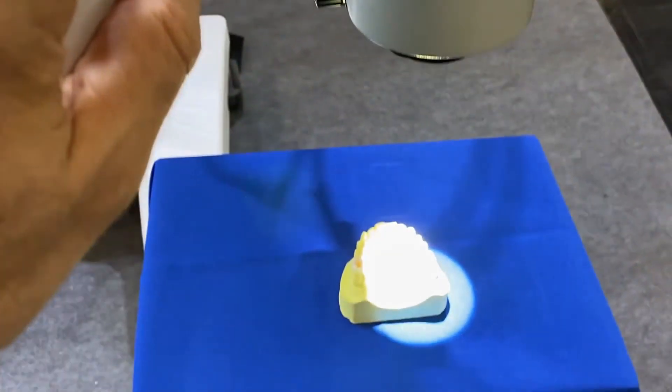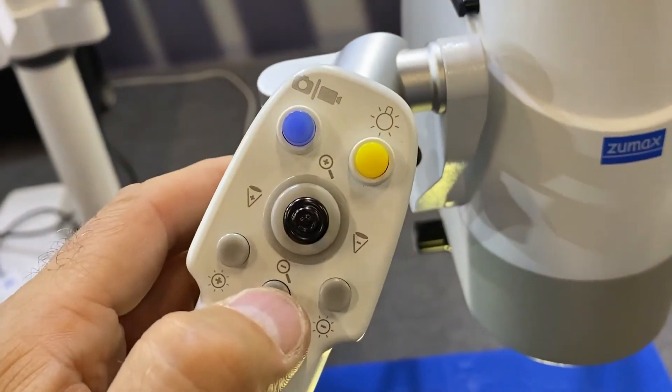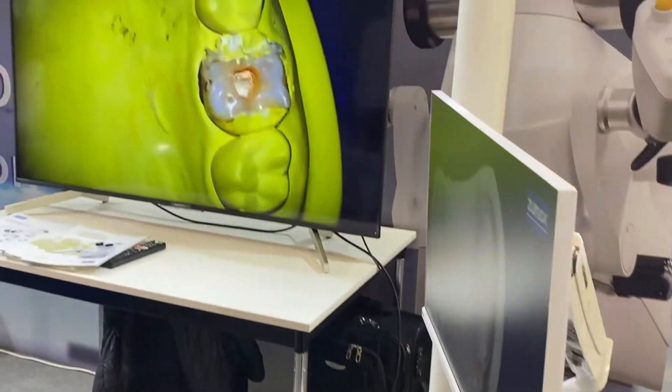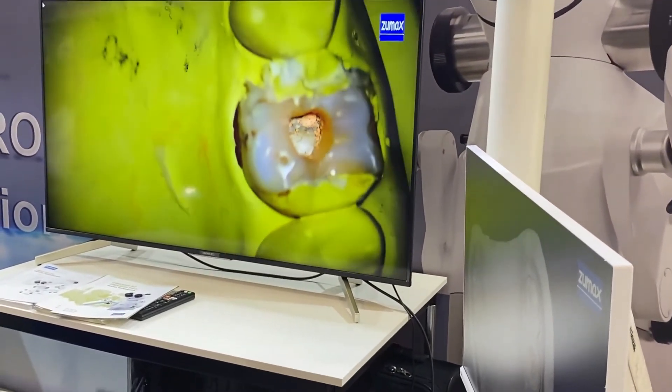You can activate or deactivate the light here. You have the magnification here up or down. So if I go up I will increase the magnification. If I go back down I reduce the magnification.